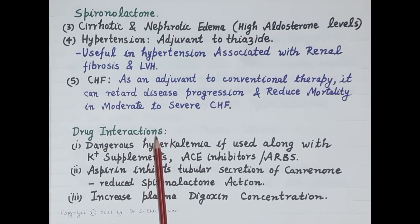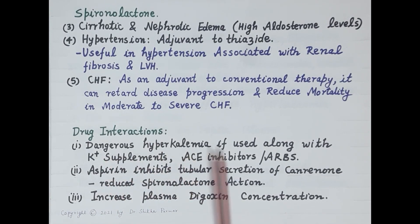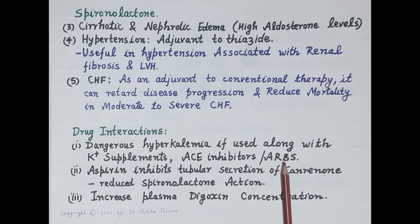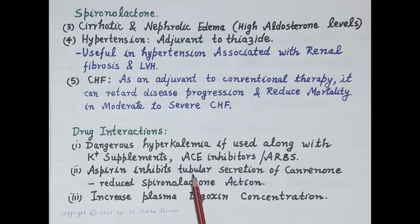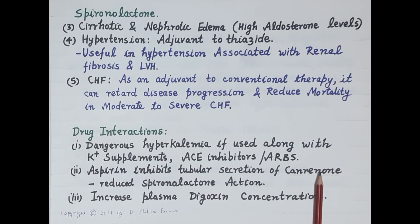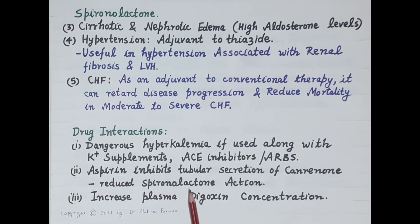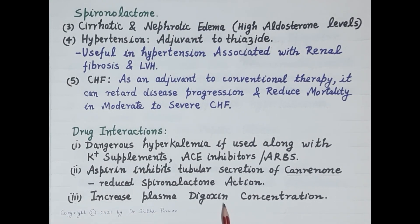Since spironolactone is a potassium sparing agent, dangerous hyperkalemia can occur if it is used along with potassium supplements, ACE inhibitors, or angiotensin receptor blockers. Apart from this, aspirin inhibits tubular secretion of canrenoate, the active metabolite of spironolactone responsible for about half to two-thirds of its action, thereby reducing spironolactone's effect. Spironolactone also increases plasma digoxin concentration.